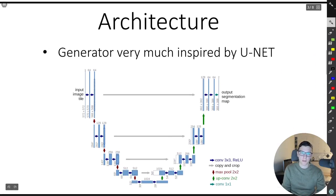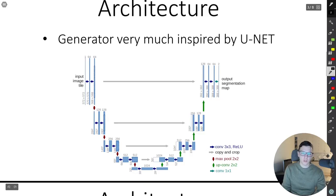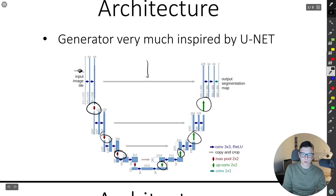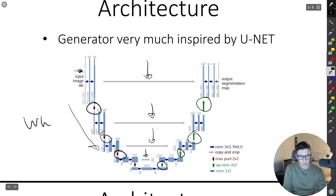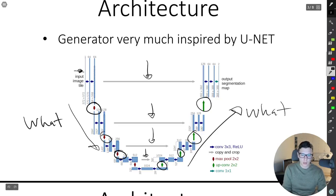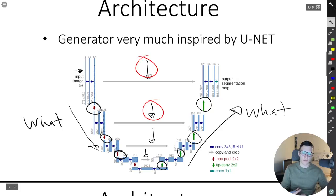The generator architecture is heavily inspired by U-Net. You have an input image, you apply convolutional layers and downsample with these red arrows until you reach a bottleneck, then you upsample using transpose convolutions, and you have skip connections in the middle. The idea is that the downward path learns what's in the image, and the upward path reconstructs it, with skip connections helping capture spatial information.